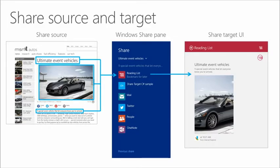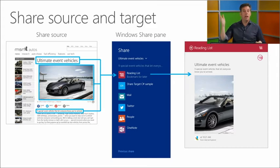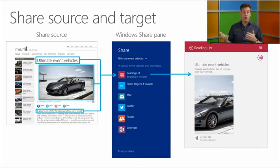Now let's see what's actually happening under the covers. This image slide shows what the structure is. On the left-hand side you see the web page — the title, the image, some text. In the middle you see the Windows share pane showing the complete list of apps that can receive that kind of information. Selecting the reading list shows the share target UI on the right-hand side — the flyout we saw before. So the left-hand side is the share source and the right-hand side is the share target. These are important concepts because your app can be a share source, a share target, or both.